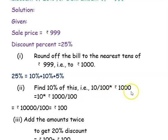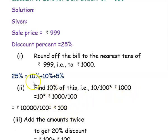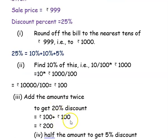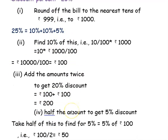Simplifying gives rupees 100 for 10 percent. For the next 10 percent it is again rupees 100, so 10 percent plus 10 percent gives rupees 200. Next, find the amount for 5 percent.